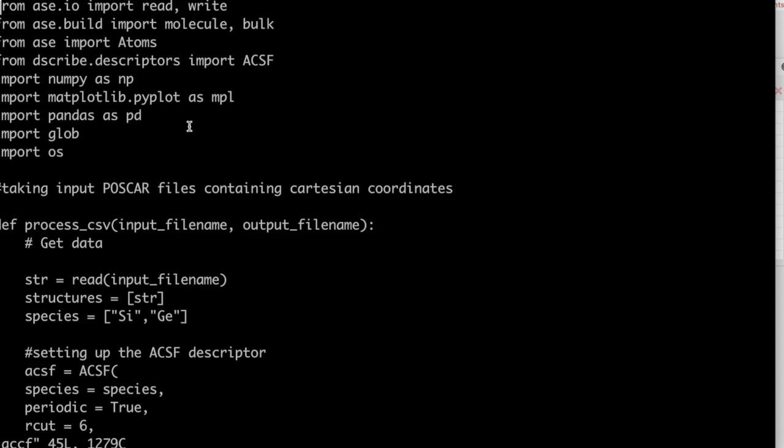Next, we define a function where POSCAR is read and converted to ACSF descriptors. POSCAR is a file that contains Cartesian coordinates of your atomic structure. This function is sent an input file and an output file name. The two arguments are an input file in .vasp format which will be sent to the function and an output file which will be generated inside the function.